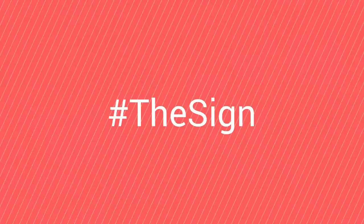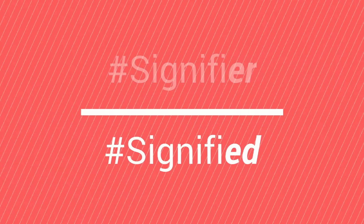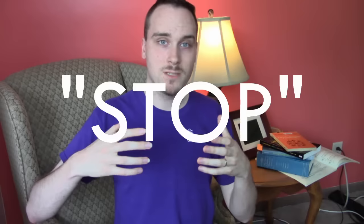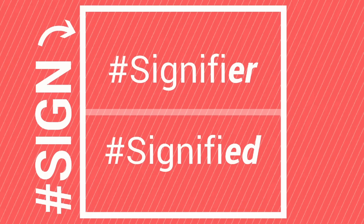Semiotics revolves around four main concepts. For semiotics, the fundamental object of study is the sign. The sign is made up of two parts: the signifier and the signified. Without getting too nitty-gritty, the signifier is the word, image, or object itself — for instance, the red light on a stoplight. The signified is the mental image that the signifier brings to mind. For the red light, the signified is stop. The association of signified with signifier makes up the sign.